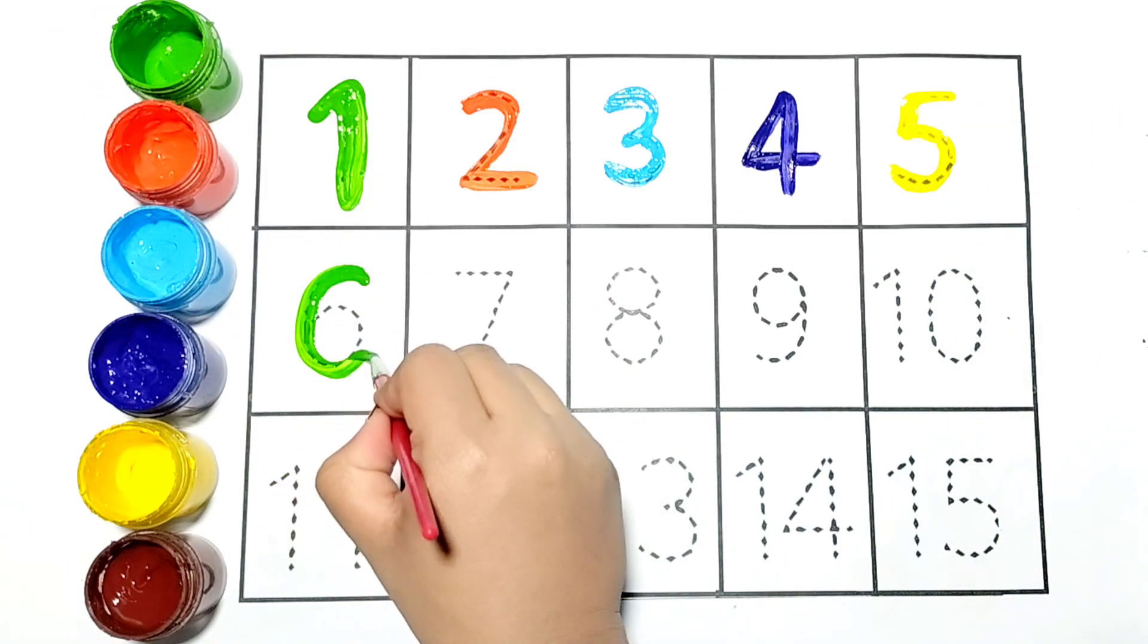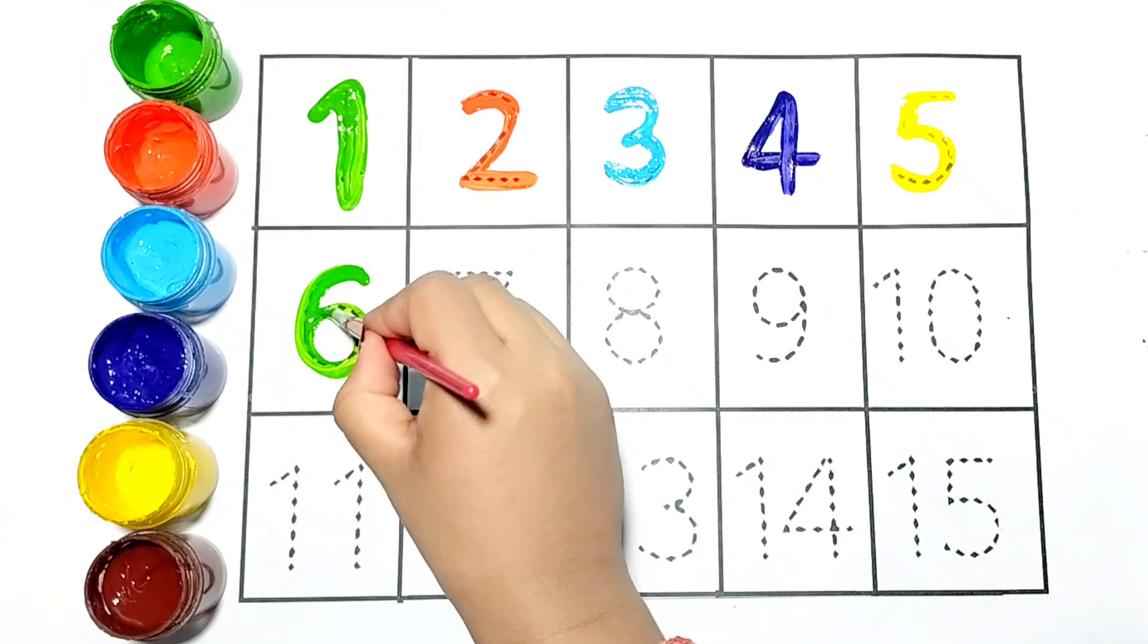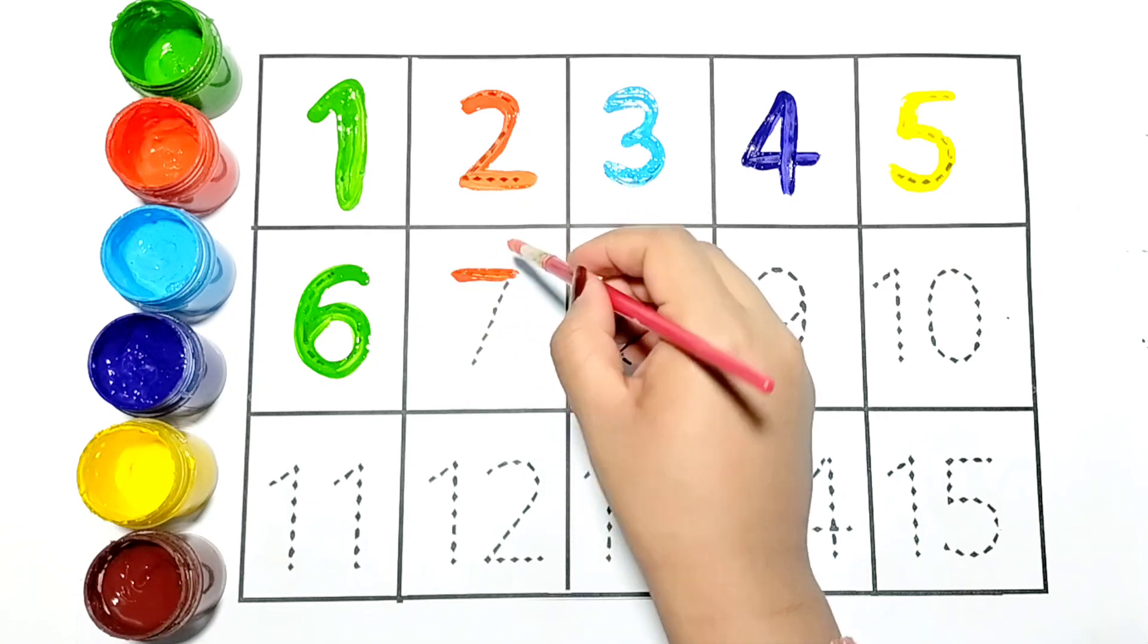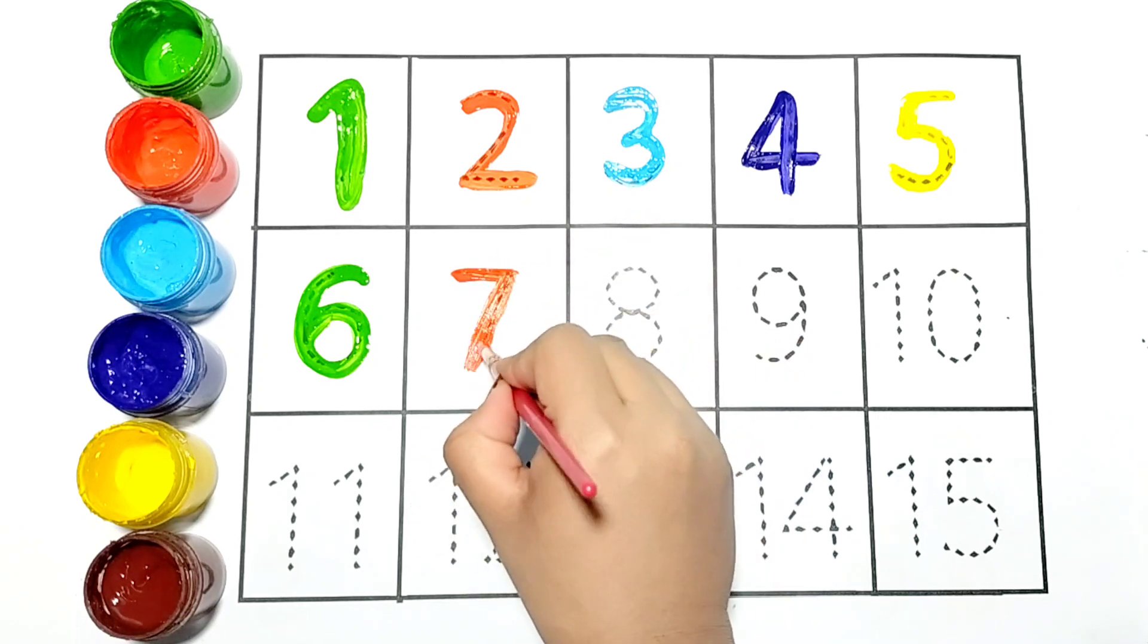Now I am writing 6 with green color. Let's write number 7. It is orange in color.